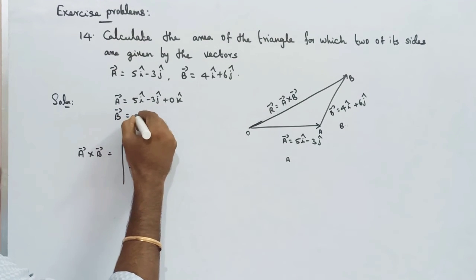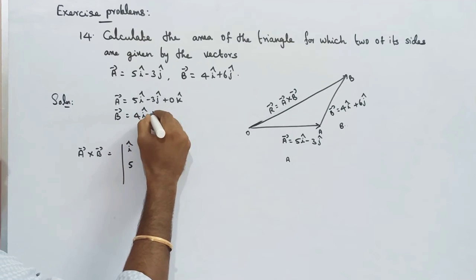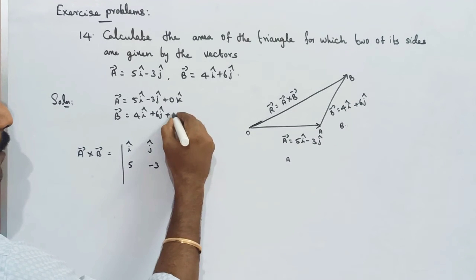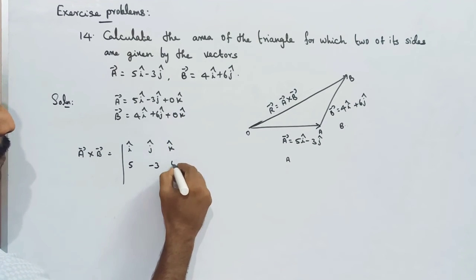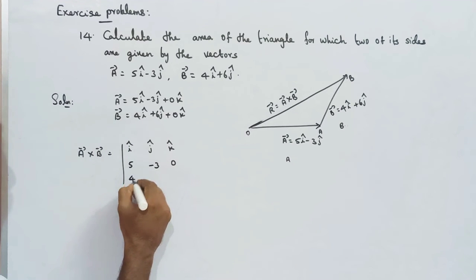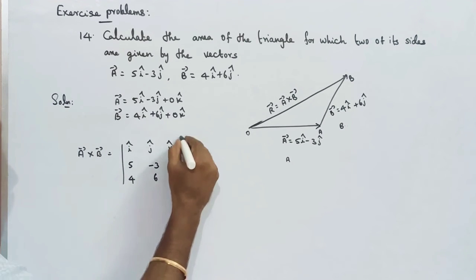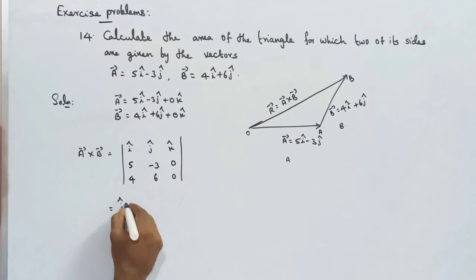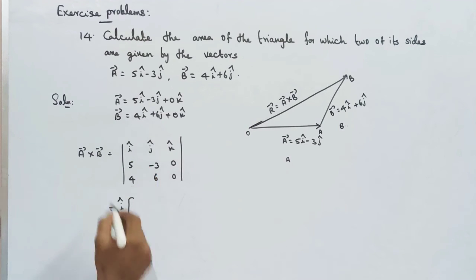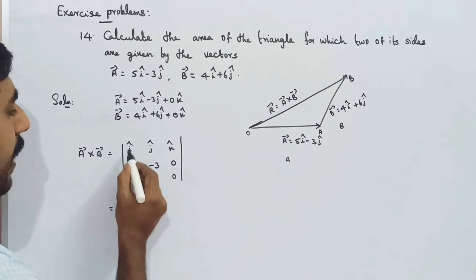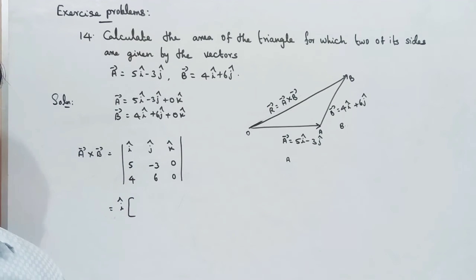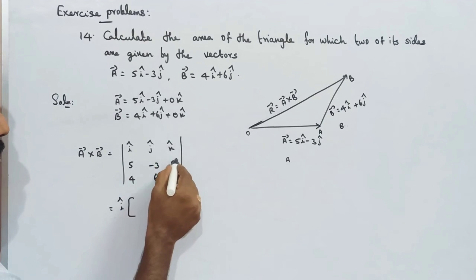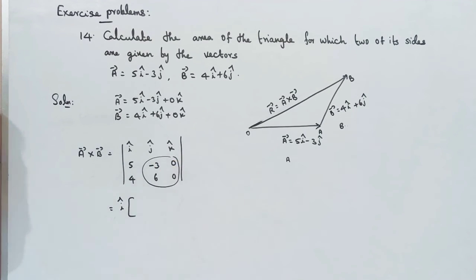Vector B is 4i-cap plus 6j-cap plus 0k-cap. We set up the determinant formula for the cross product using i-cap, j-cap, k-cap in the first row. We cancel the respective row and column for each component using cross multiplication.